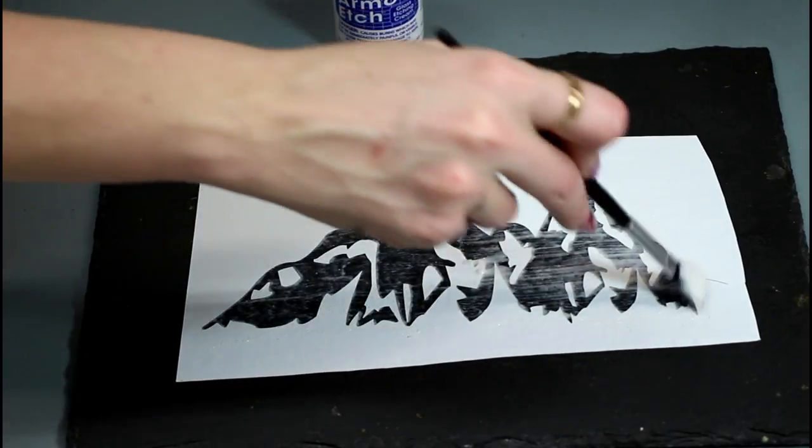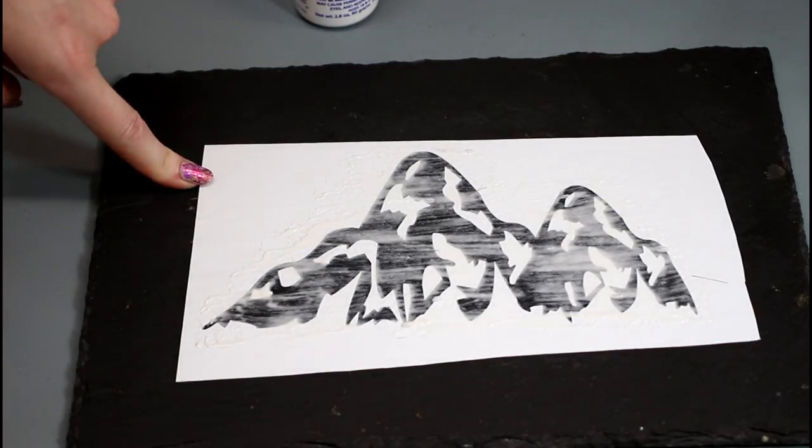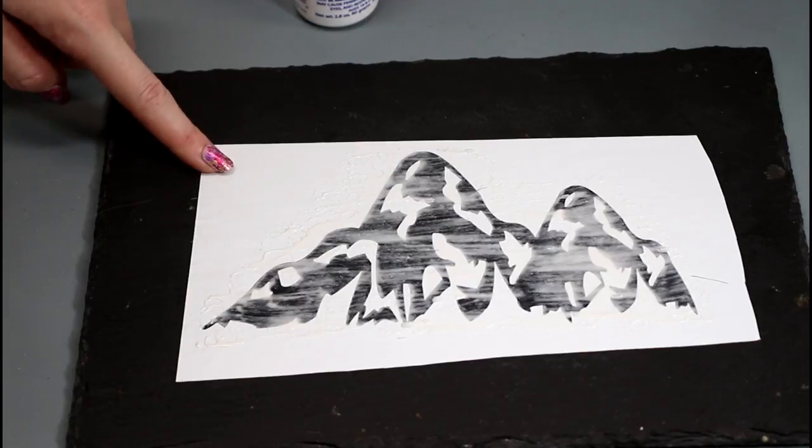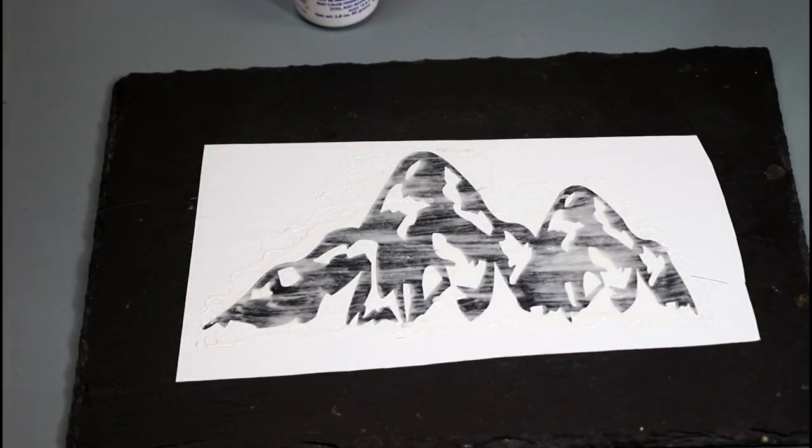So once you've applied your second thicker layer, you're then going to leave it for about 15 to 20 minutes. And I leave it for 20 minutes. I'm then going to take it indoors and I'm going to run it under some lukewarm water. I'm then going to remove the vinyl and I'm just going to gently give it a rub with some kitchen towel just to remove any excess cream. You then want to leave it to dry for about 5 to 10 minutes, and you'll see as it dries the etch really starts to come up.